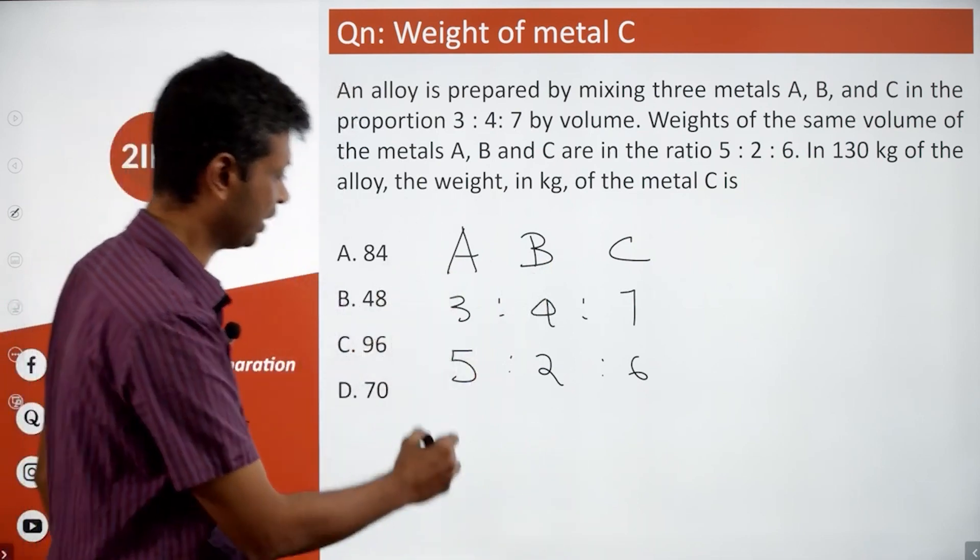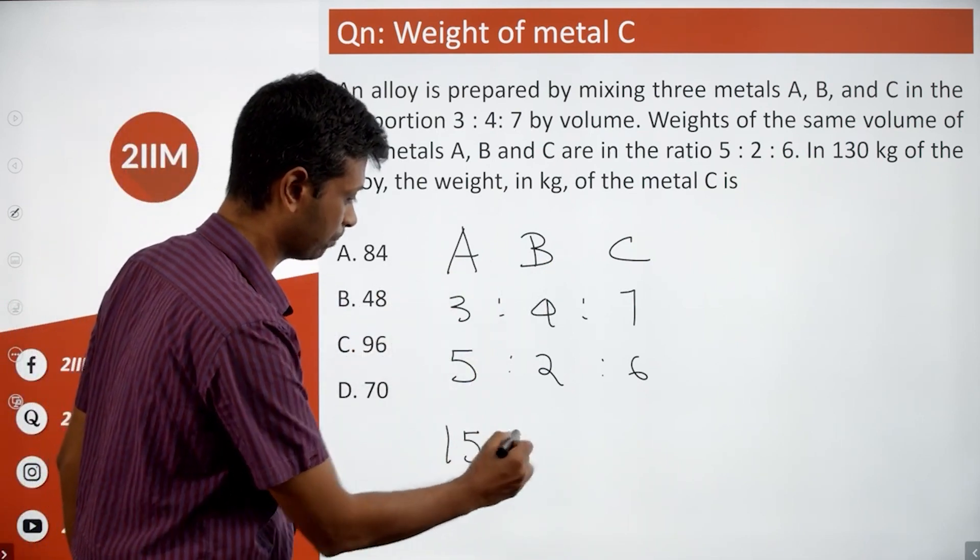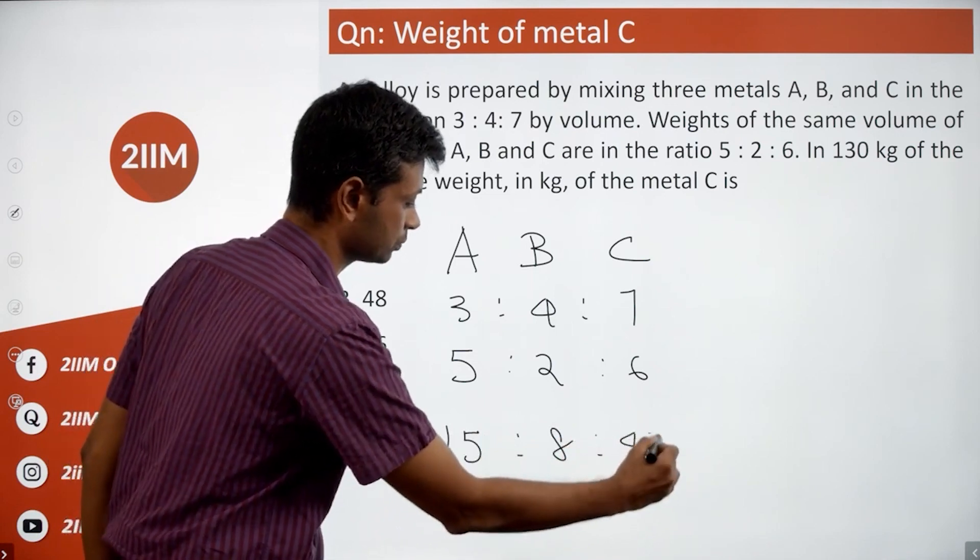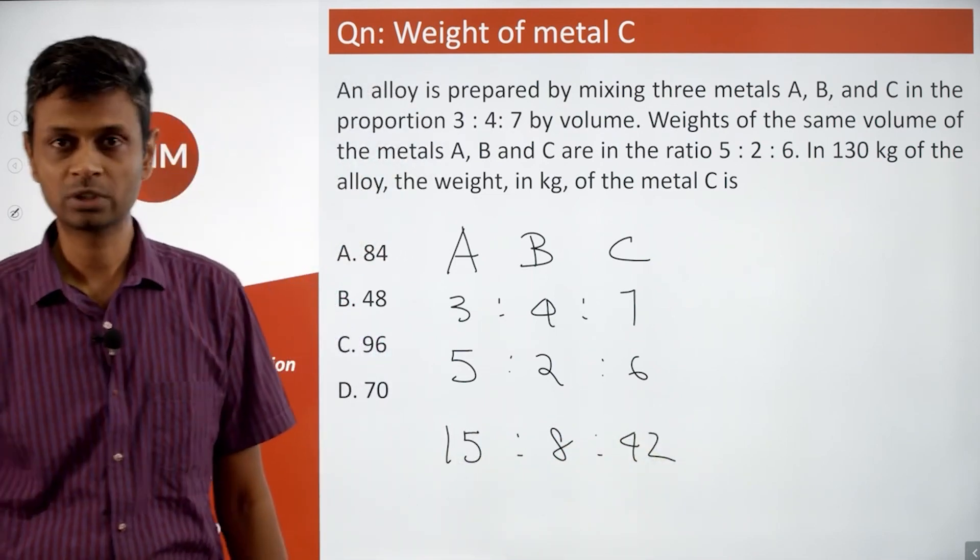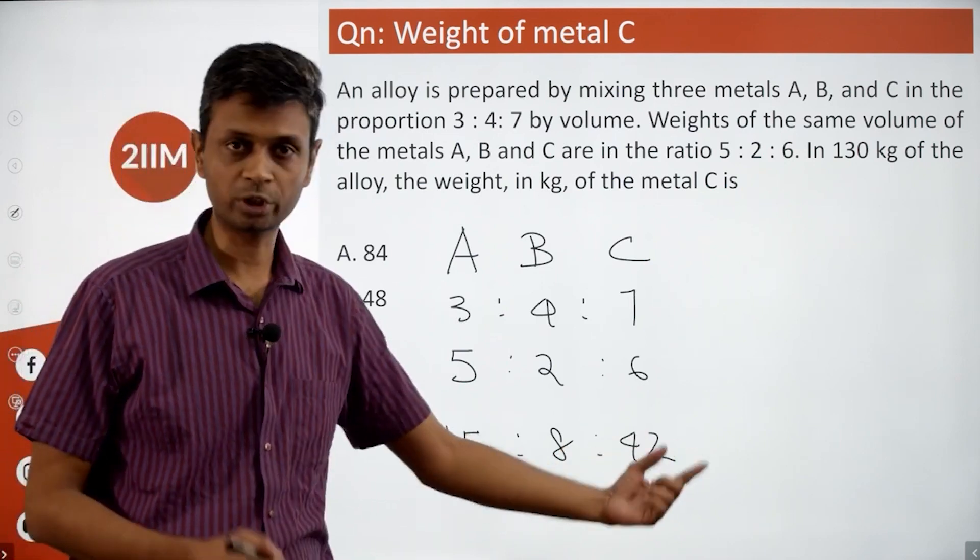So the ratio by weight is going to be 15:8:42. With the weight, then we are pretty much done. So the ratio by weight is 15:8:42.